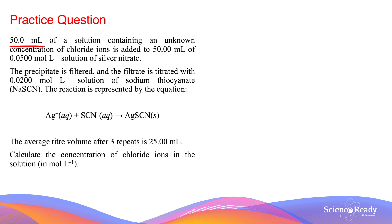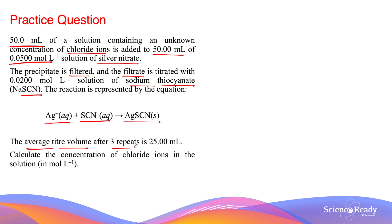50 millilitres of a solution containing an unknown concentration of chloride ions is added to 50 millilitres of a silver nitrate solution with a concentration of 0.05 moles per litre. This reaction produces a precipitate, which is filtered, and the filtrate is titrated against a standard solution of sodium thiocyanate. The reaction between the thiocyanate ion and the excess silver ion produces a white precipitate of silver thiocyanate. The average titer volume after three repetitions is exactly 25 millilitres. Calculate the concentration of chloride ions in moles per litre.